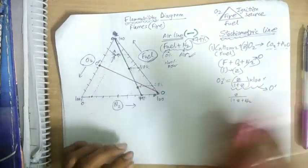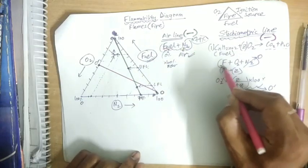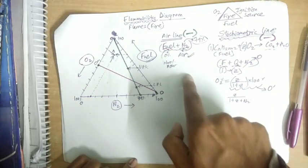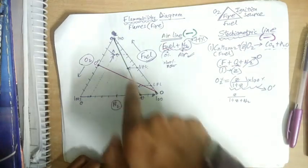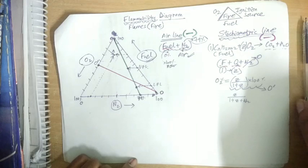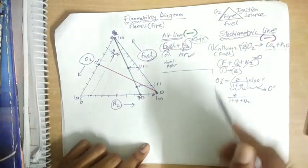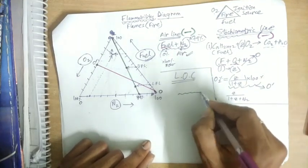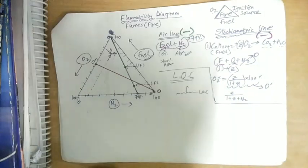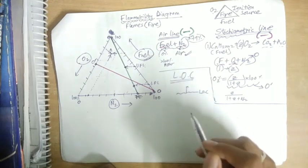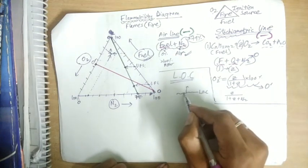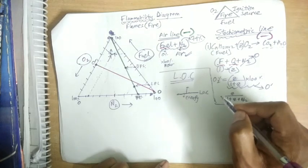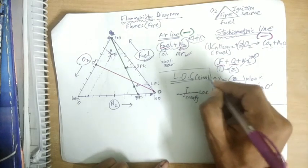The air line connects the 79% nitrogen point to the 100% fuel point, while the stoichiometric line connects point O' on the oxygen axis to the 100% nitrogen vertex. The LOC — limiting oxygen concentration — is the minimum oxygen concentration below which there is not enough energy for the system to heat up and catch fire.